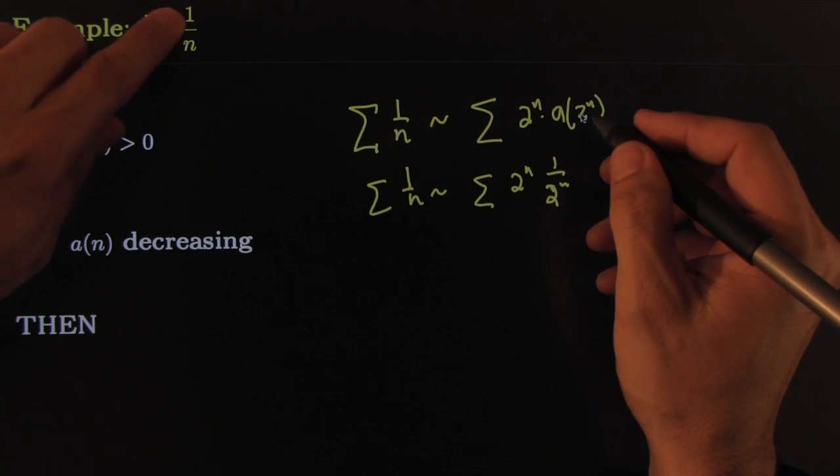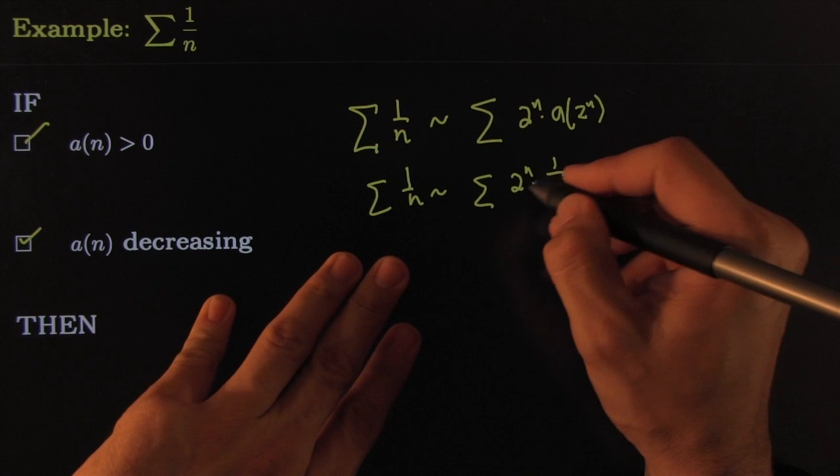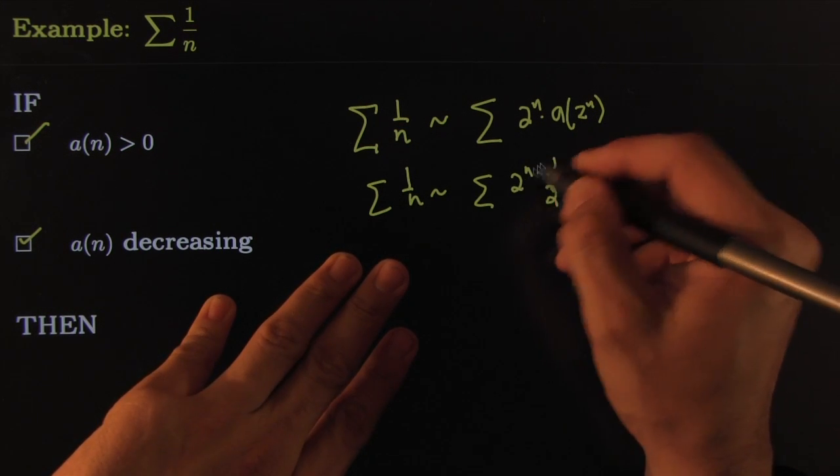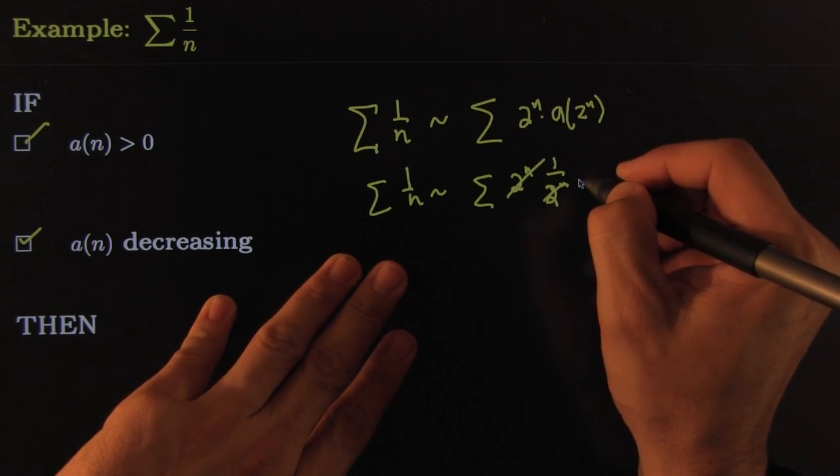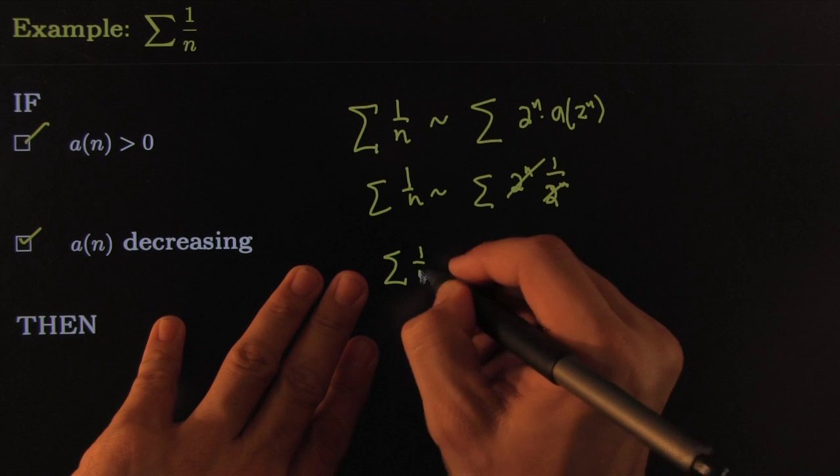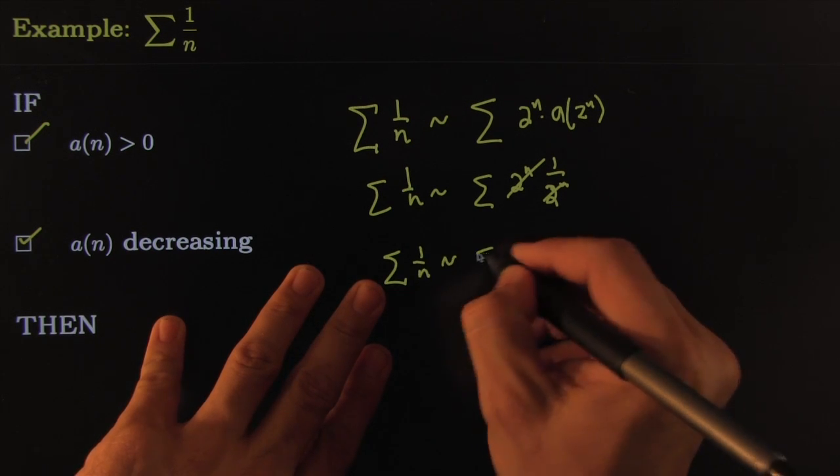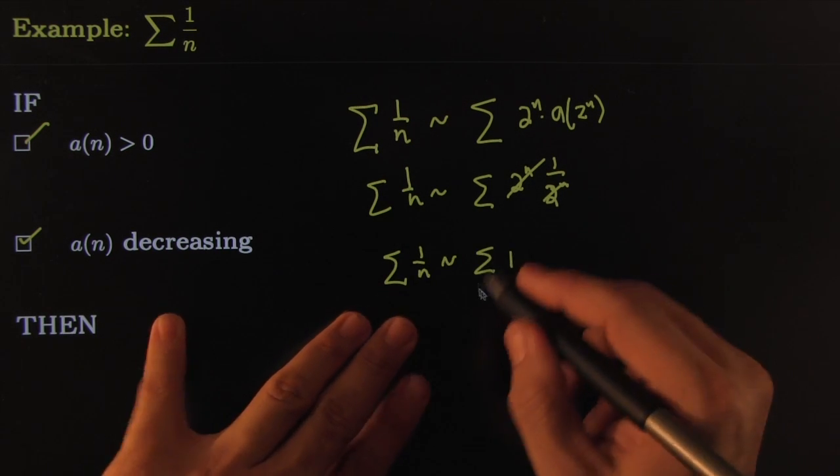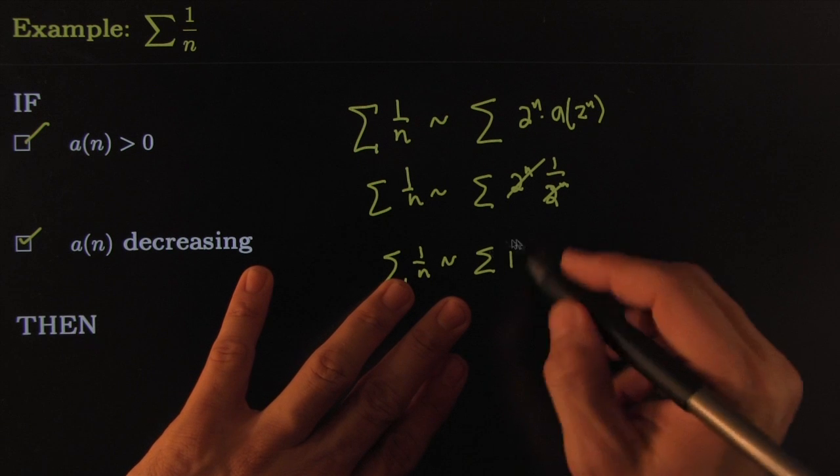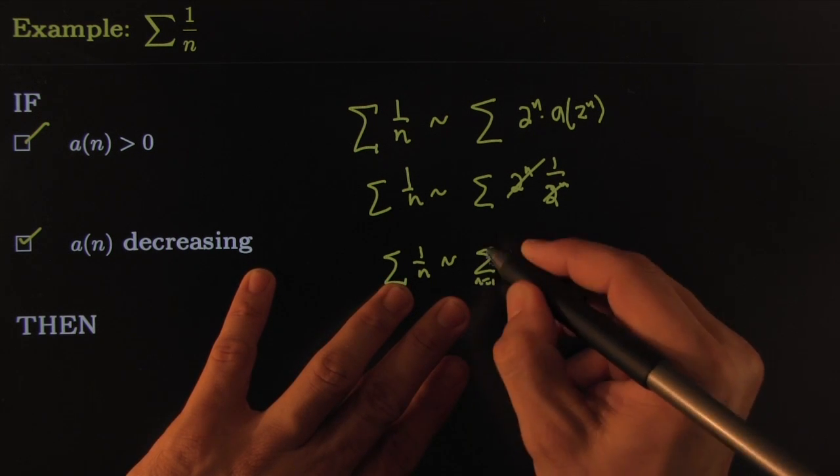These ones will cancel, leaving just 1. And so we get the conclusion that 1 over n behaves just like 1. Well this one is ridiculously divergent because you're adding 1 plus 1 plus 1 plus 1 infinitely many times.